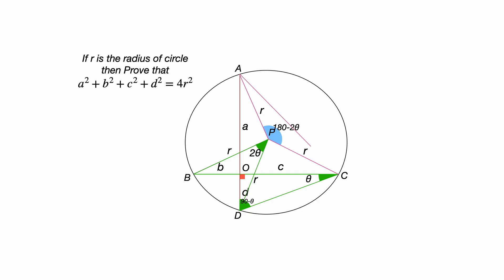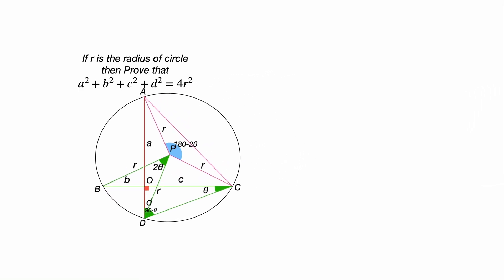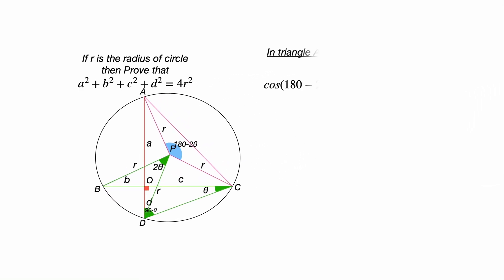Now, join A to C. In the triangle APC, we can use cosine rule. If we use the cosine rule in the triangle APC, we would be getting cos(180 - 2θ) = (r² + r² - AC²) / (2rr). That will give you -cos(2θ) = (2r² - AC²) / 2r². Let's take that equation number 1.